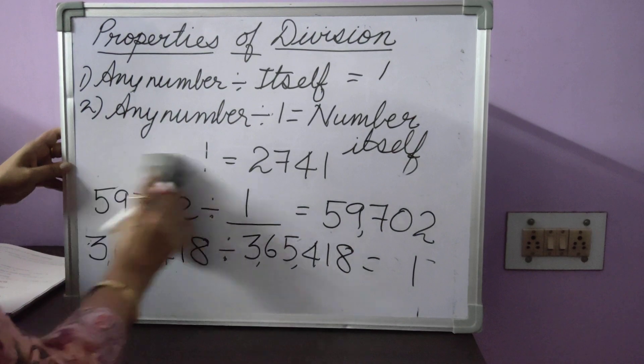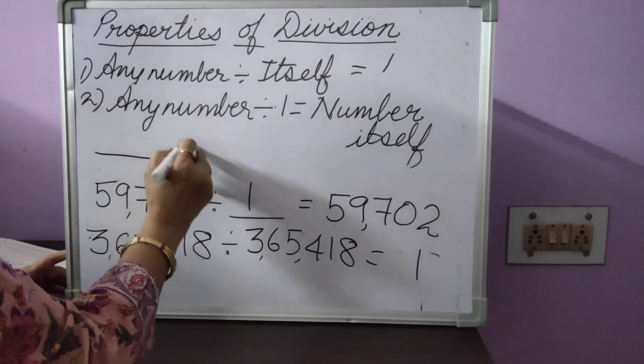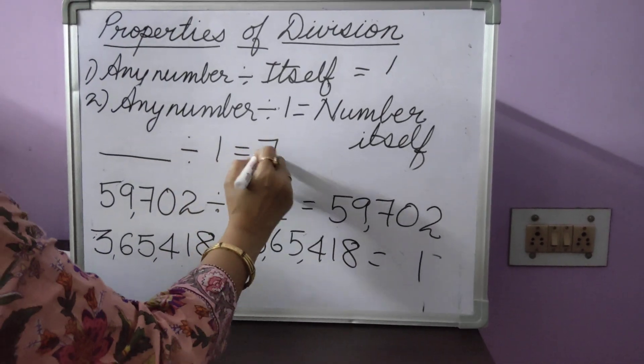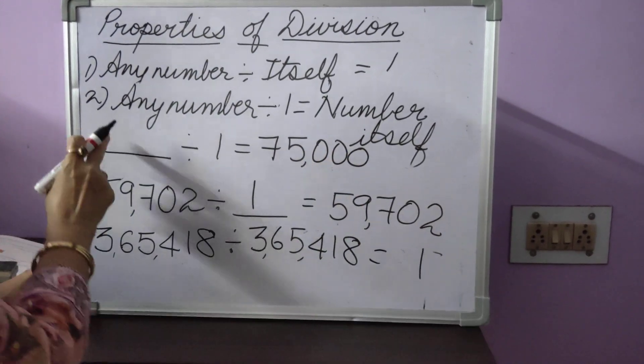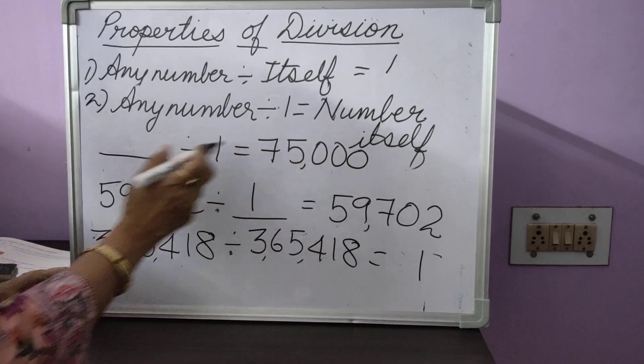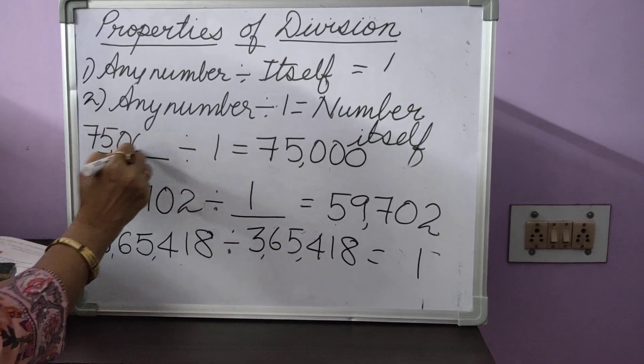One more example. You have a missing number over here. That number is being divided by 1 to give you the answer 75,000. So, what is this missing number? If you divide by 1, you get 75,000. So, it has to be 75,000 only.